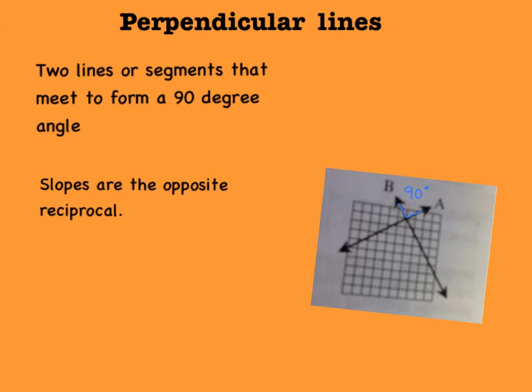Perpendicular lines are two lines or segments that meet to form a 90 degree angle, and their slopes are the opposite reciprocal.